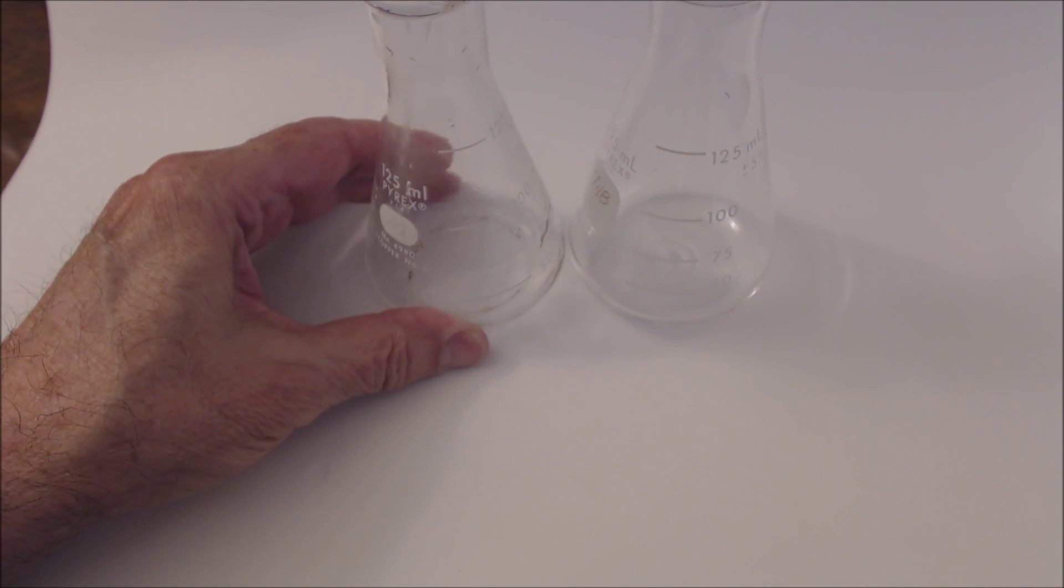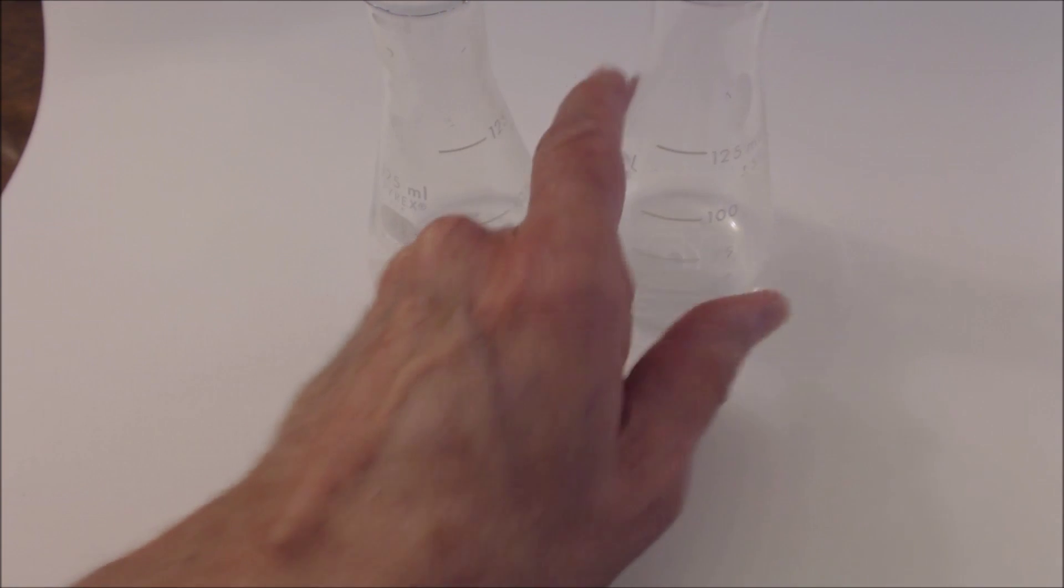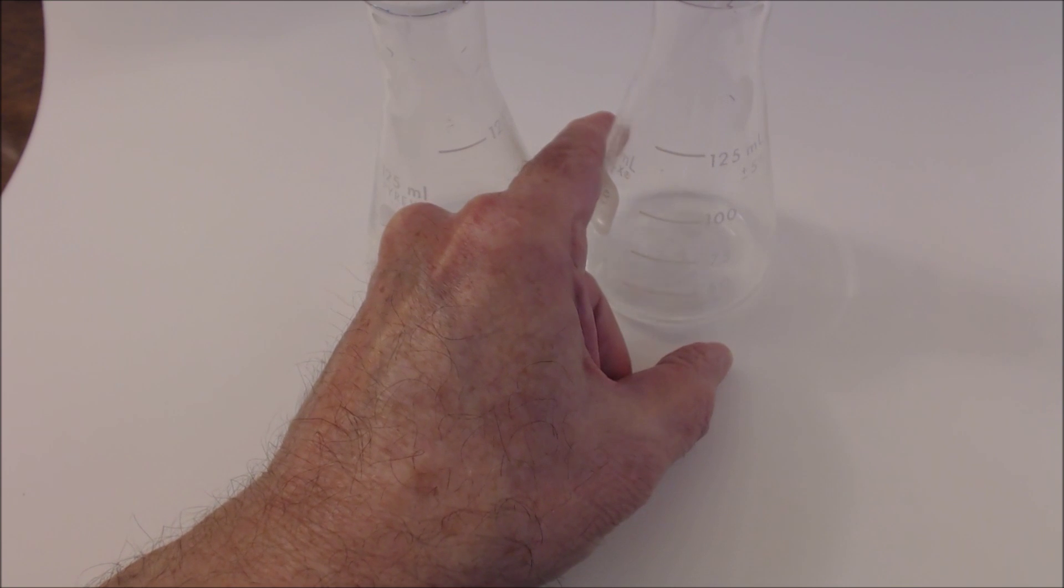I'm going to put about 25 milliliters of acetic acid in two containers, two Erlenmeyer flasks.